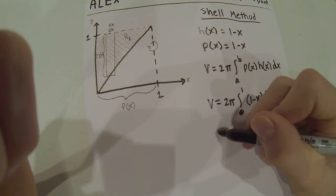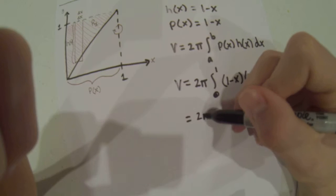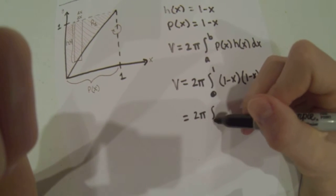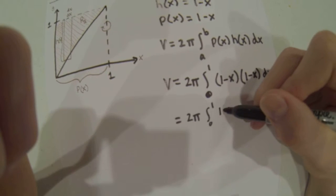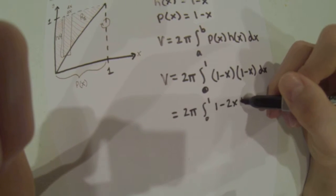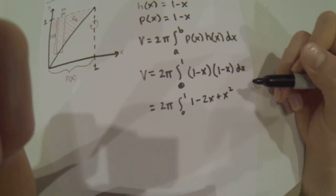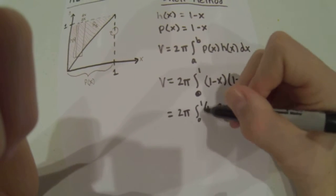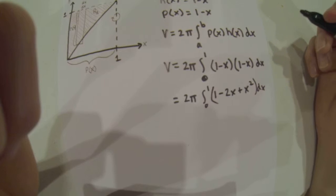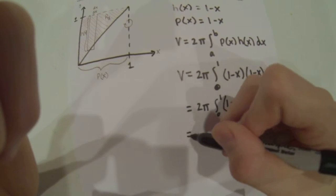From here, we multiply it out. So 2π integral from 0 to 1 of 1 minus 2x plus x squared dx. And then from here, it's easy to integrate.